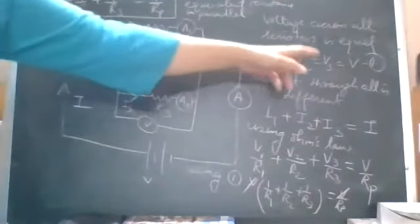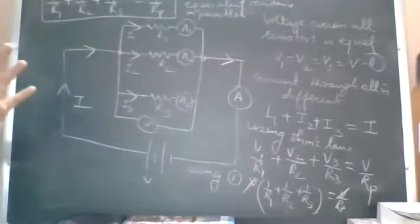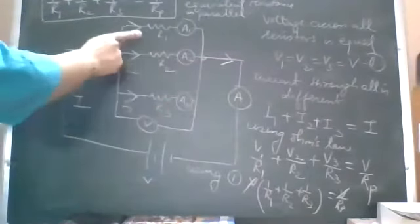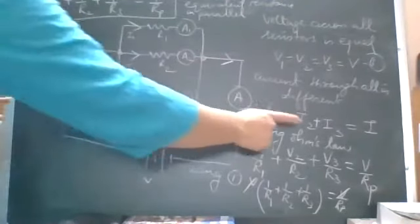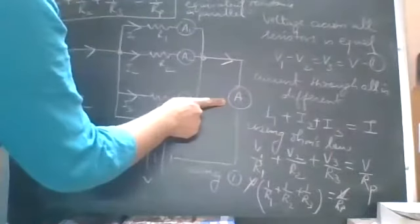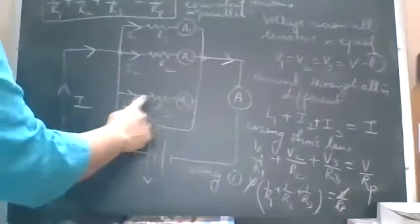So our observations of the circuit was all the voltages are same. V1 equals V2 equals V3 equals total battery voltage. And current through all the resistors was different. But when we add these three different values, it came out equal to the total current in the circuit. I1 plus I2 plus I3 equals the total current I.